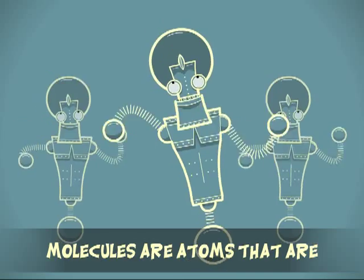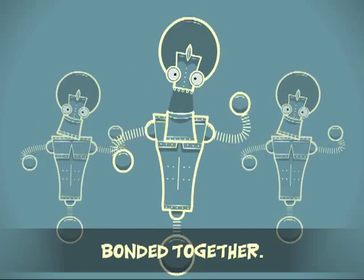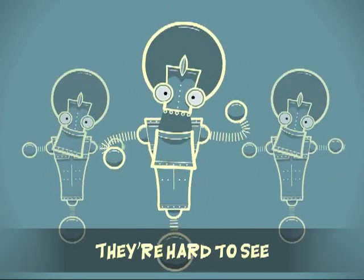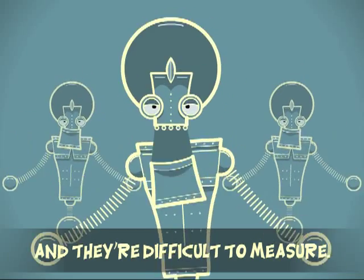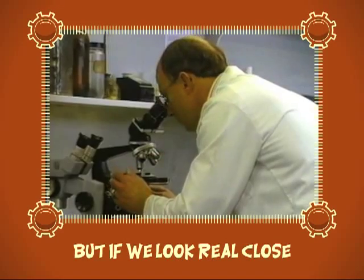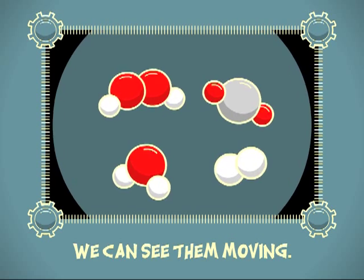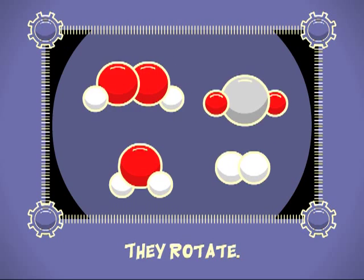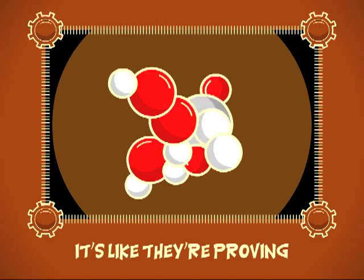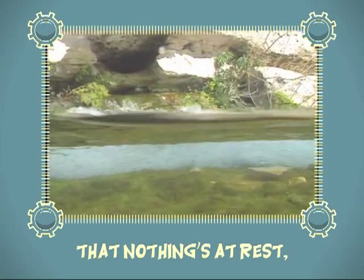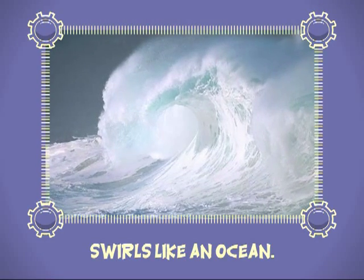Molecules are atoms that are bonded together. They're hard to see and they're difficult to measure. But if we look real close, we can see they're moving. They vibrate, they rotate. It's like they're proving that nothing's at rest, that everything's worse like an ocean.